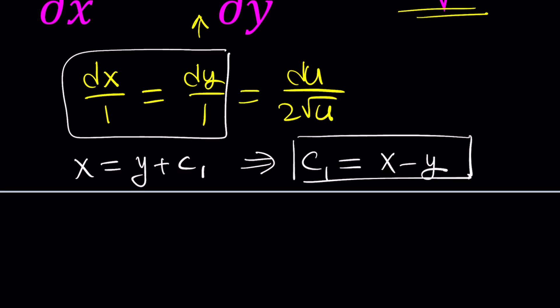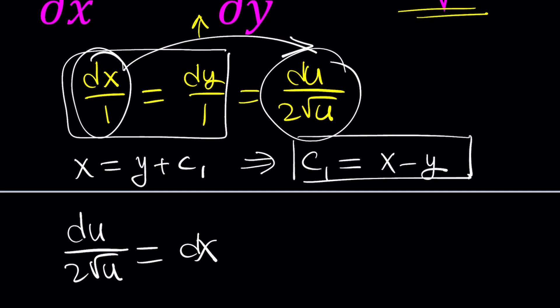Now, if you look at another part of this equation, and you can go pretty much any way you want, but I'd like to associate this one and this one. I don't know why, but if I do, I get something like this. du over 2 root u equals dx.